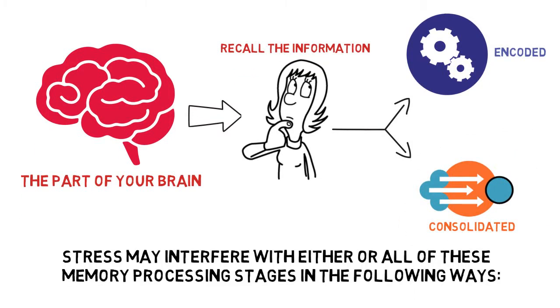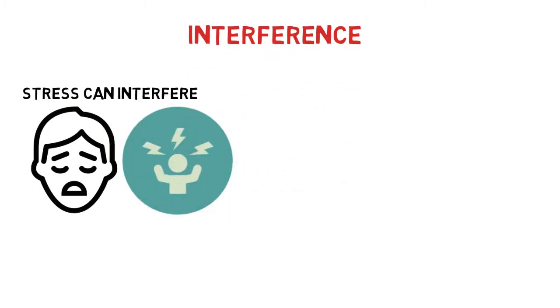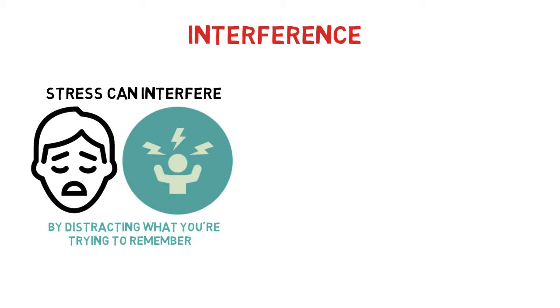Stress may interfere with either or all of these memory processing stages in the following ways. Interference. Stress can interfere with any of the above processes by distracting what you're trying to remember.